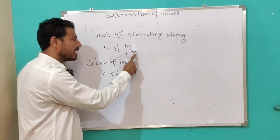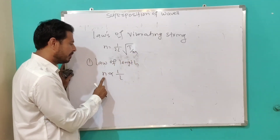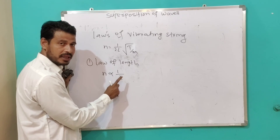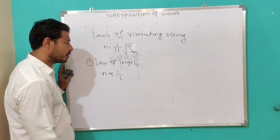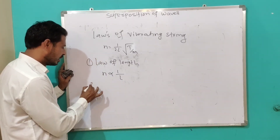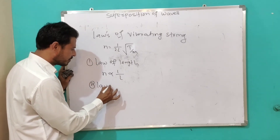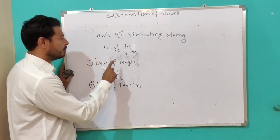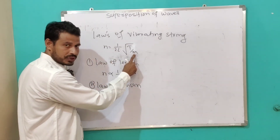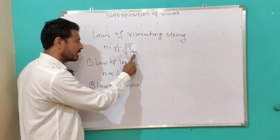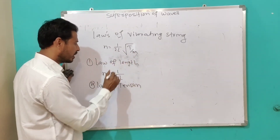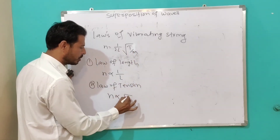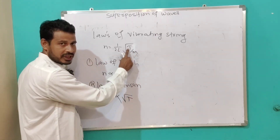Second law — Law of Tension: if length L and linear density m are constant, then the fundamental frequency is directly proportional to the square root of the tension in the string.